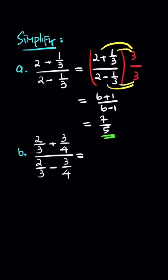And also we have 2 out of 3 plus 3 out of 4. So we can simplify. This is going to be 2 out of 3 plus 3 out of 4 divided by 2 out of 3 minus 3 out of 4.